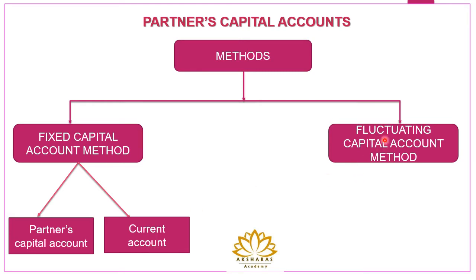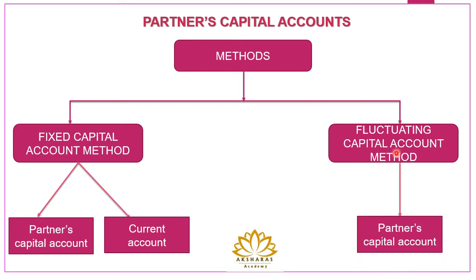Next is the fluctuating capital account method, where the capital account will keep on changing year after year due to various transactions. Under this method only one account is prepared, that is the partners capital account.